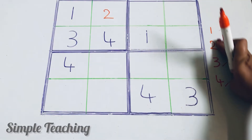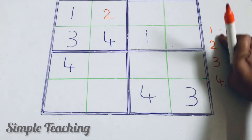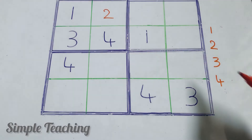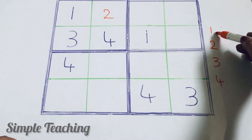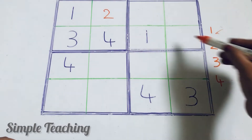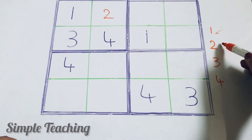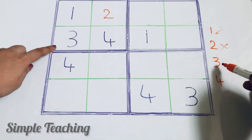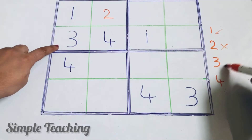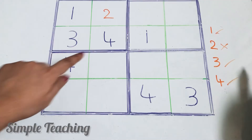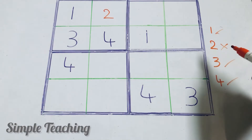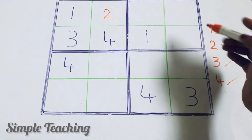In the same way, is there a 1? Yes, 1 is there. Is there a 2? No. Is there a 3? Yes. Is there a 4? Yes. And what is the missing number here? The missing number is 2.